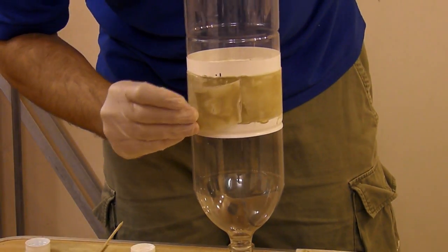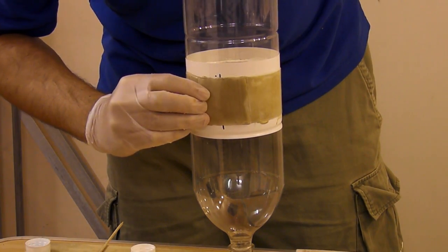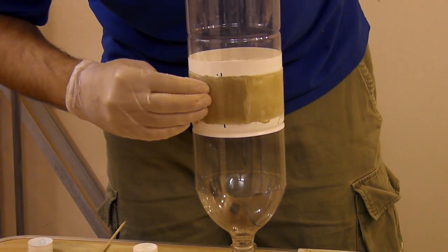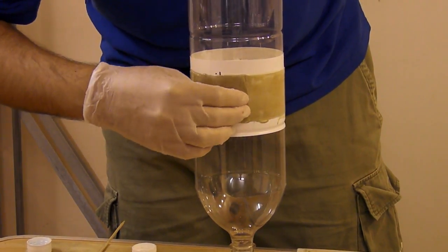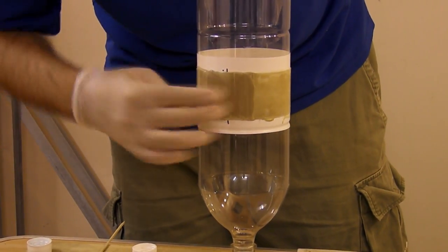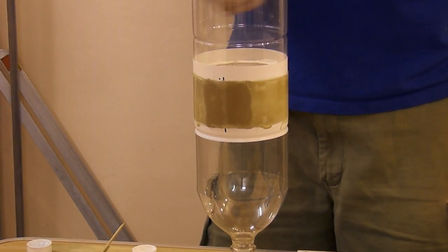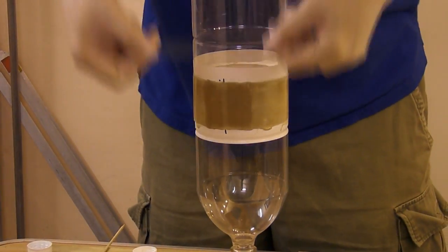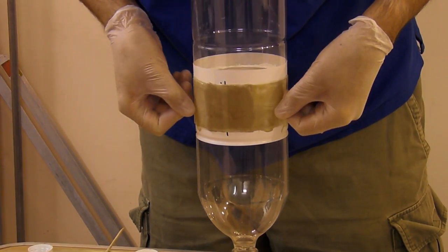Put the patch over the join, and again work out any bubbles that are inside there. Nice and even. And then using tape, secure the patch while it cures.